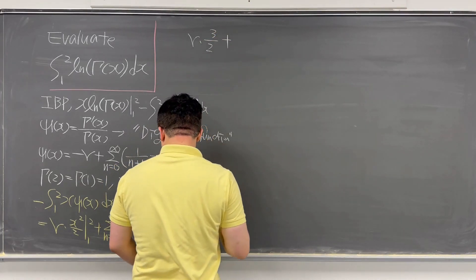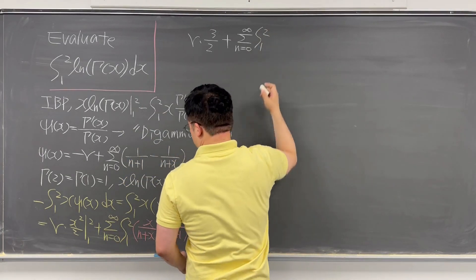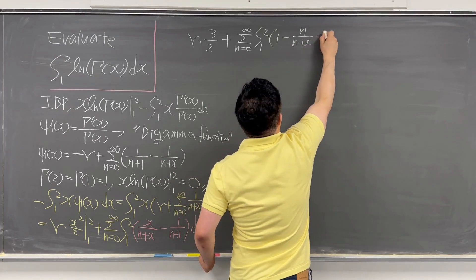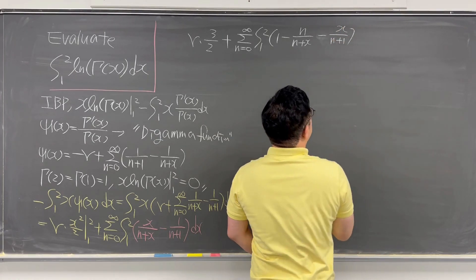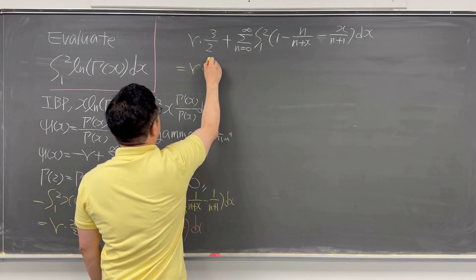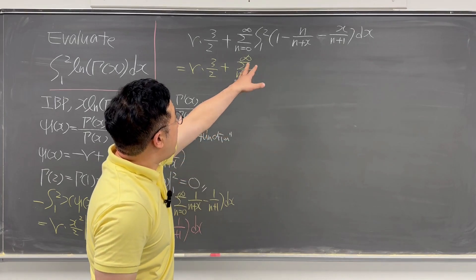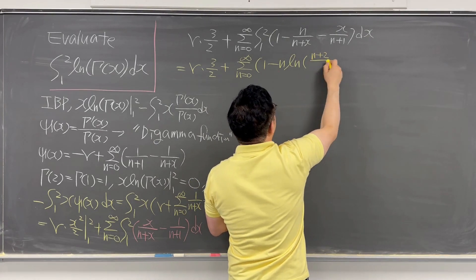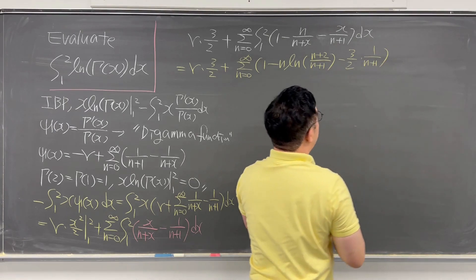Continuing, this gives (3/2)·γ plus the summation from n=0 to infinity of [(1−n)·ln((n+2)/(n+1)) − (3/2)·(1/(n+1))]. To evaluate this, I'll fix the upper limit to capital N and consider the partial sum: (3/2)·γ plus the sum from n=0 to N of [(1−n)·ln((n+2)/(n+1)) − (3/2)/(n+1)].